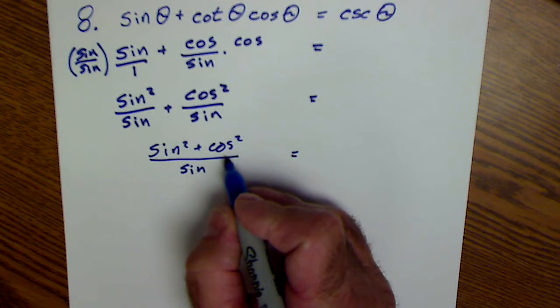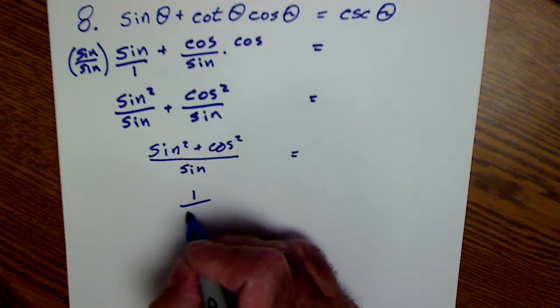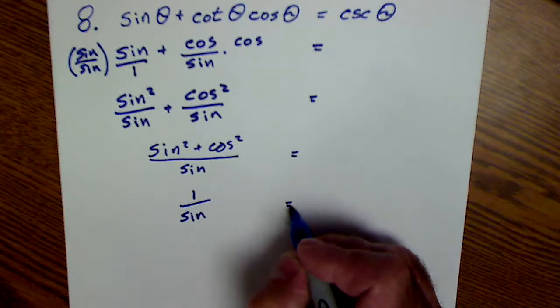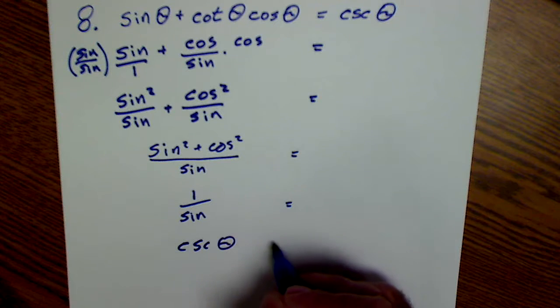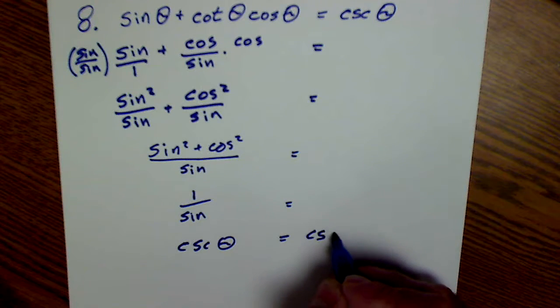I could see that. Hopefully I recognize that as a Pythagorean identity. So that's one over sine. Then I know that's a reciprocal identity. It's cosecant. So cosecant of theta is equal to cosecant of theta. They're always hard until you see them done and then they seem easy.